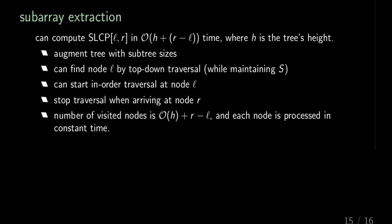And then this gives us our algorithm and the algorithm works as follows. We first do a precomputation step where we can augment the tree with the subtree sizes. And then having the subtree sizes, we can find in the top-down traversal from the root, the node L, where the task is to compute the sparse LCP array, an interval from L to R. So we want to extract this interval in time, depending on the height of the tree, which is H plus the length of this interval.